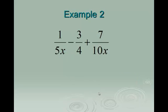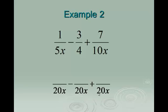On the next example, think for a minute to yourself: what would be a common denominator for 5, 4, and 10? What's the number that 5, 4, and 10 all go into? 20. So my common denominator would be 20x.